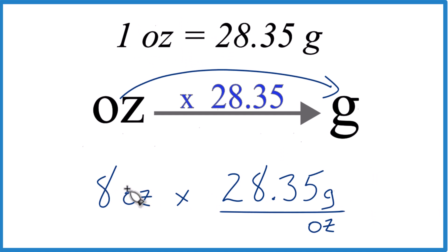And what's really nice is now when we multiply, we have ounces on the top here and on the bottom here. They're going to cancel out.